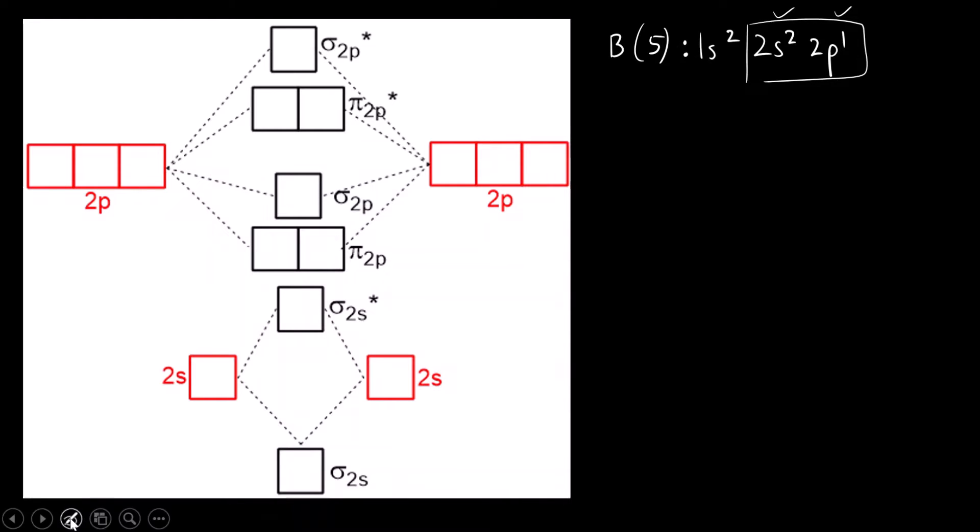For one boron atom, there are three electrons, and for the other boron atom, there are also three electrons - two in 2s and one in 2p. So in total, we have to fill six electrons in the B2 molecular orbital diagram.